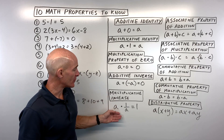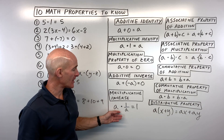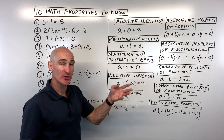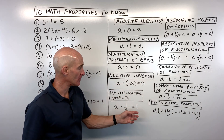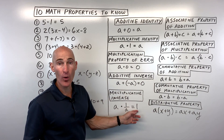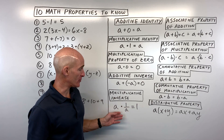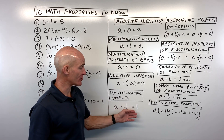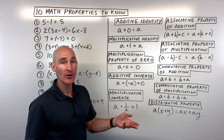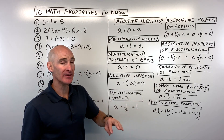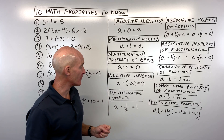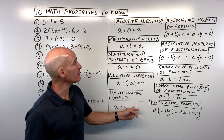The multiplicative inverse: when you multiply a number times its reciprocal, you always get one. So two times one-half equals one, or three times one-third equals one. When you multiply by the multiplicative inverse, you get one.